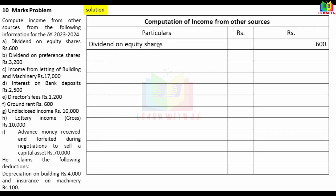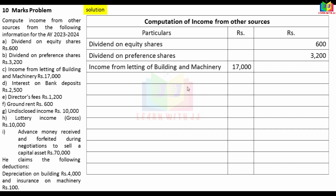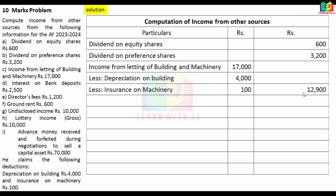Dividend on equity share Rs.600, dividend on preference share Rs.3,200. Income from letting of building Rs.17,000 — from this we deduct depreciation Rs.4,000 and insurance Rs.100, totalling Rs.4,100. So net income from letting = Rs.12,900. Interest on bank deposit Rs.2,500.